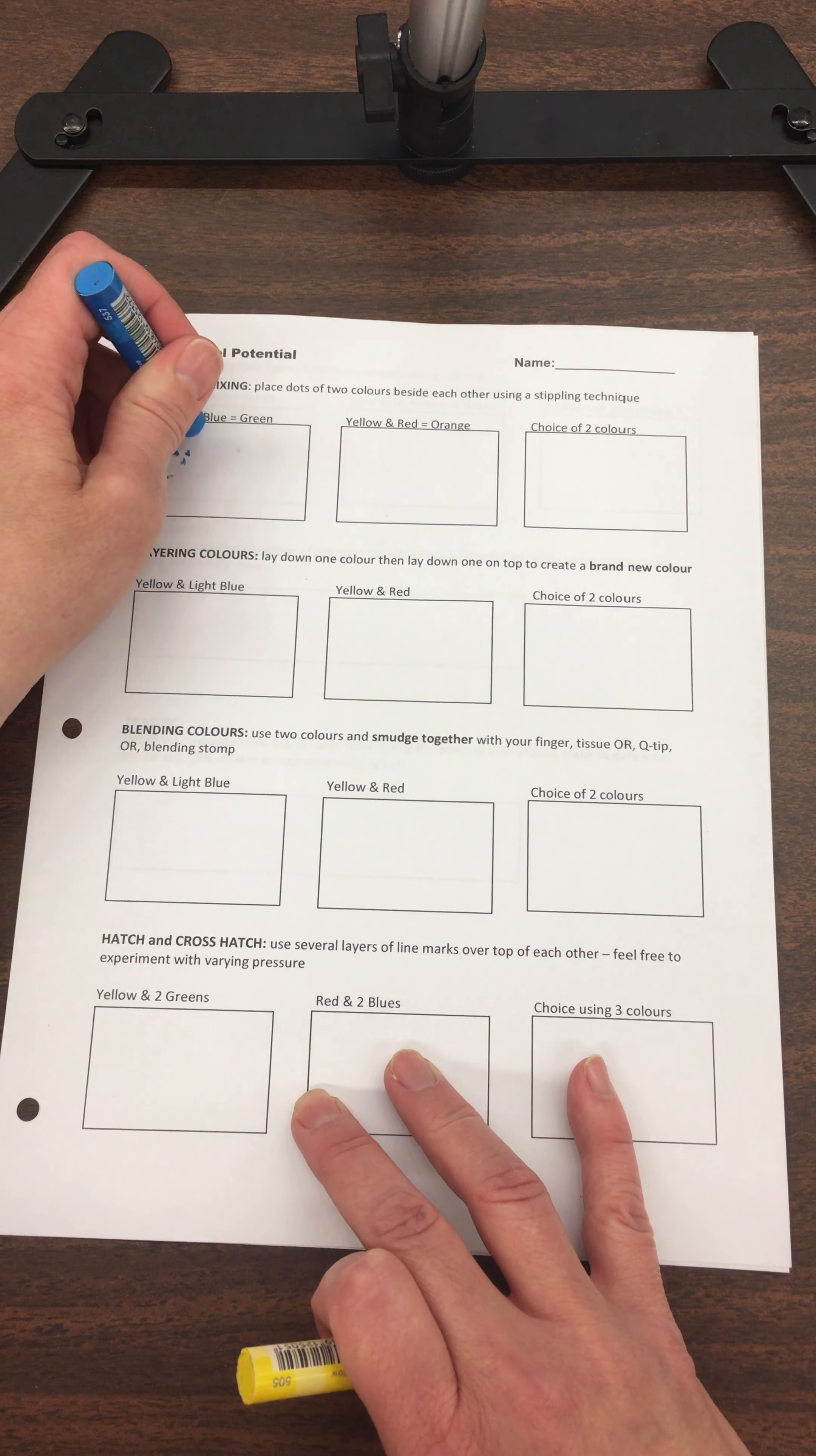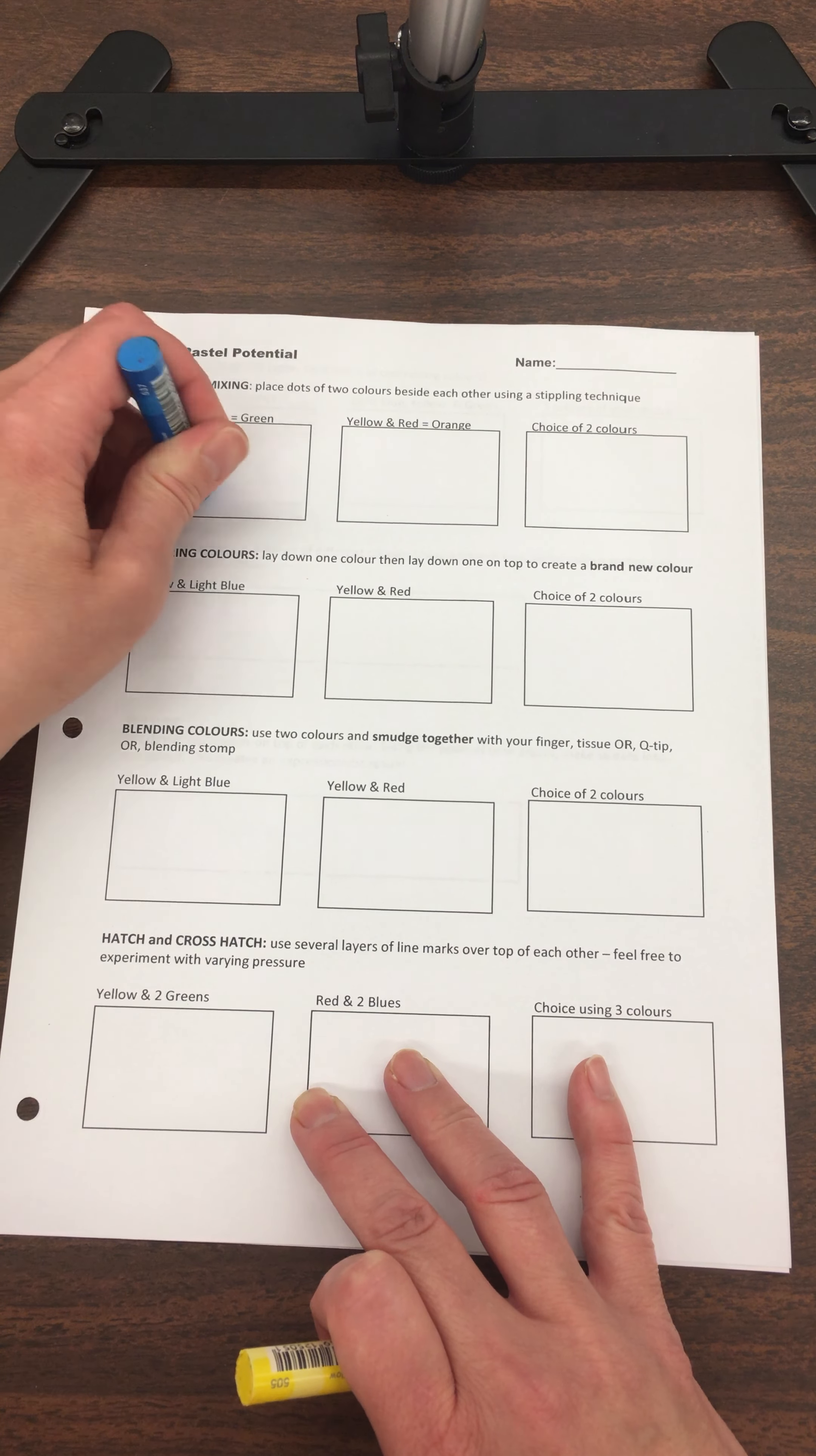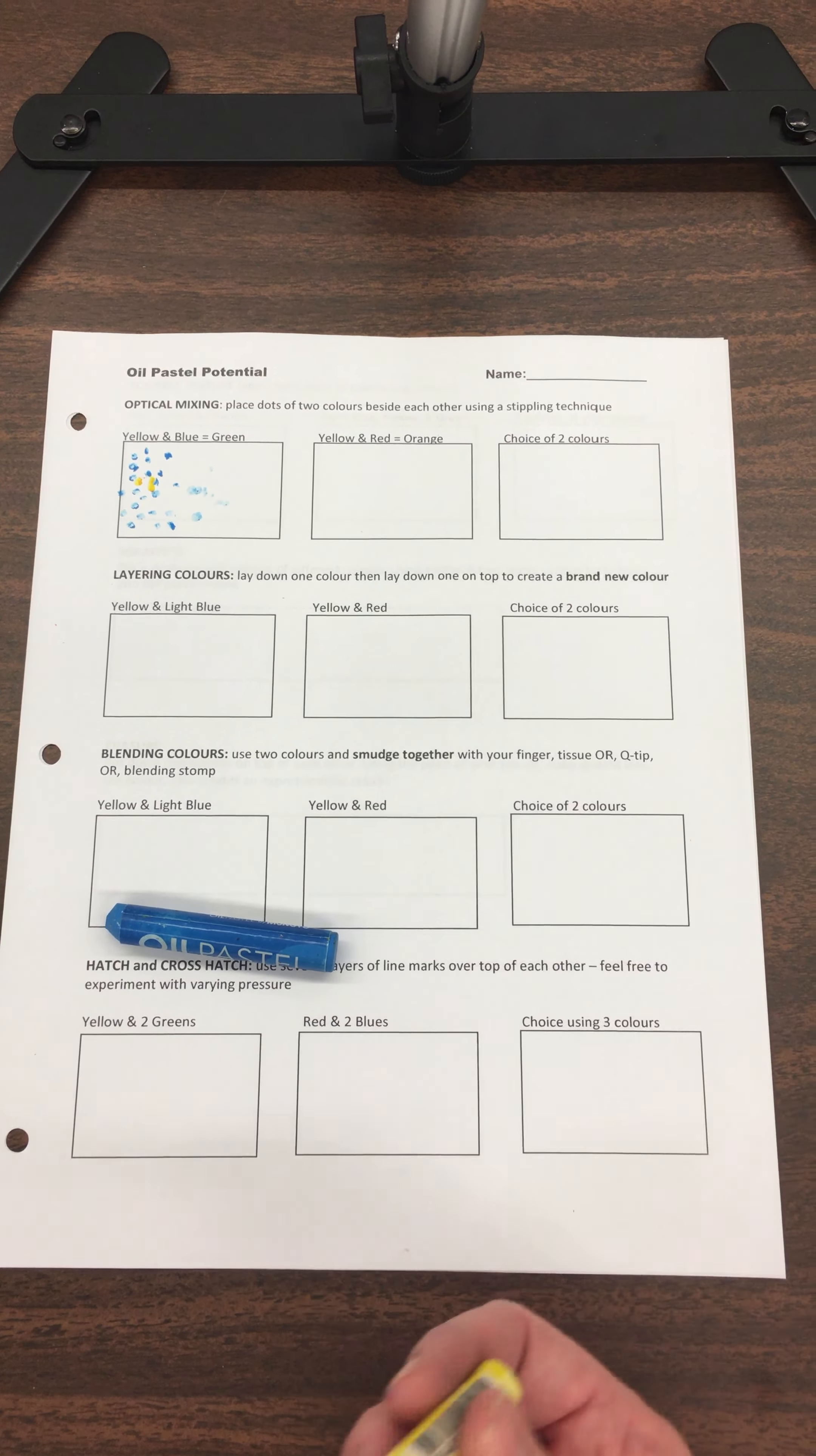Stippling is just holding the pastel upright and making dots. Please don't smash the pastel against the table because we are then damaging materials. It doesn't require any noise to create little dots - we shouldn't be hearing that sort of thing or the materials will get ruined.